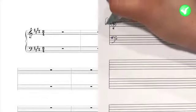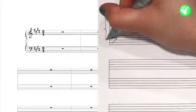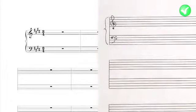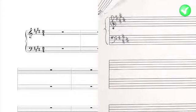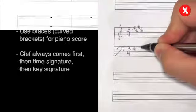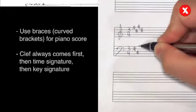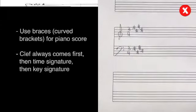Piano scores have a curly bracket, or brace, at the beginning of each system. As in any vocal or instrumental score, the clef comes first, then key signature, and finally the time signature. Here, the bracket is missing, and the position of the time signature and key signature are reversed.